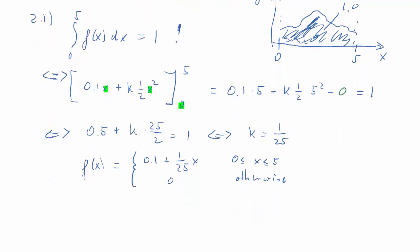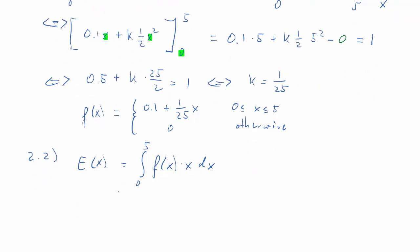Second question is, we should evaluate the expected value and the variance of this random variable defined by this PDF. So we know the expected value is the integral of f(x) times x dx, again evaluated over the interval of the entire support of the random variable. So we need to find a new integrand, the integrand of f(x) times x. So it may be easiest to first check what that is. f(x) times x, that will be 0.1 times x plus 1 over 25 x squared.